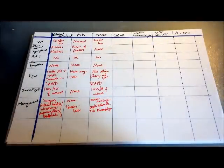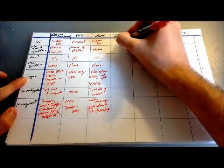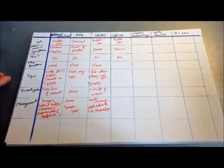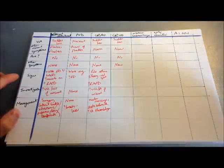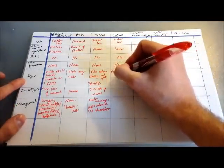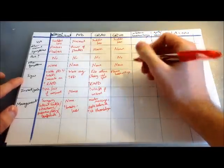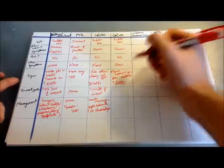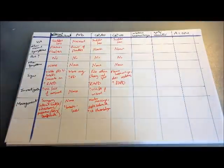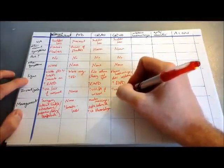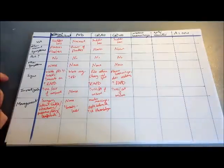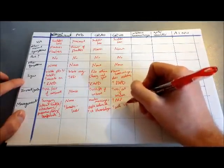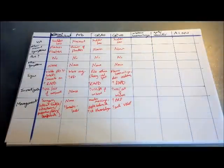Moving on to central retinal vein occlusion: sudden loss of vision, no other visual symptoms, no pain, no other systemic symptoms. On examination, the retina will show flame haemorrhages — the large haemorrhages across the retina — and oedema of the optic disc. There might again be a relative afferent pupillary defect depending on the extent of the occlusion. Similar to arterial occlusion, you can do an ultrasound or fluorescein angiography if unsure. For treatment, think about pan retinal photocoagulation if there's risk of neovascularisation, and consider anti-VEGF — though remember it's off-licence for this and is very expensive.